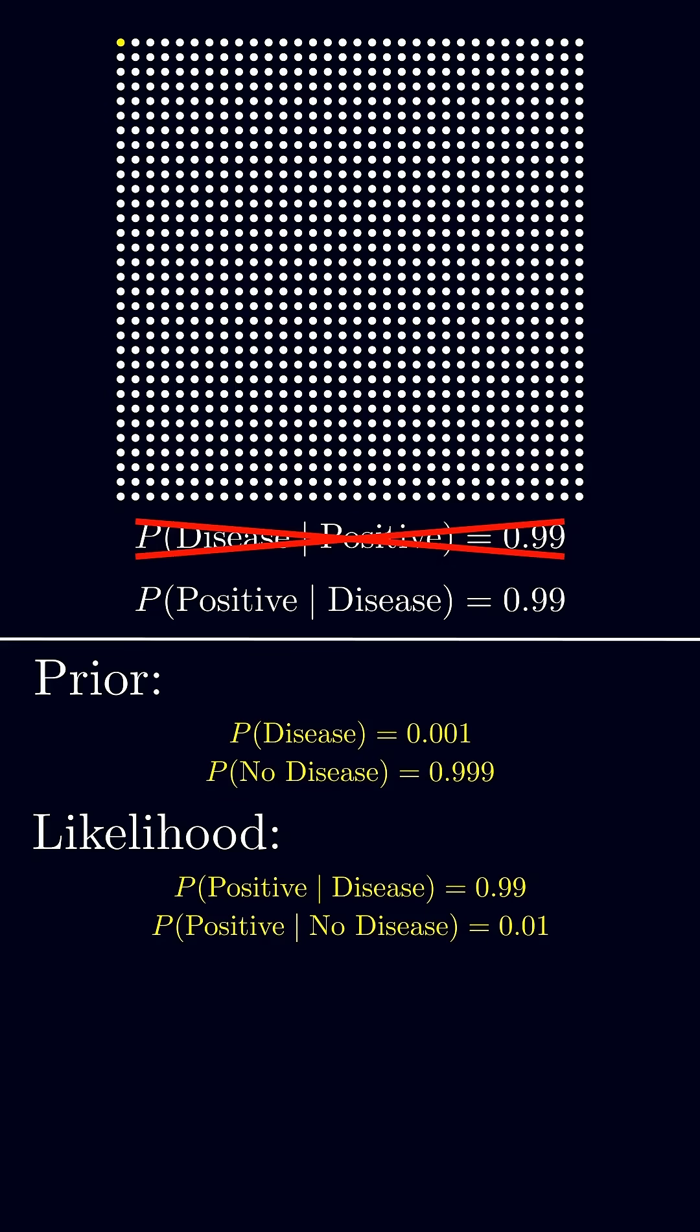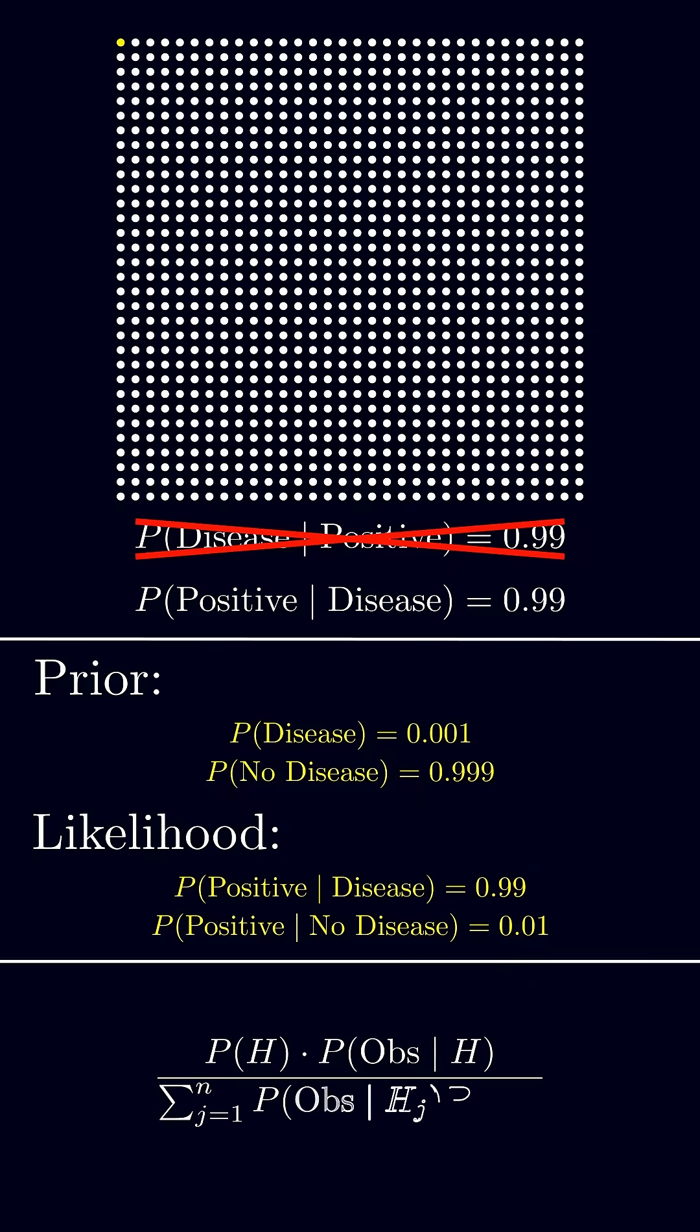We can plug these numbers into Bayes' theorem and get that the posterior probability is 0.99 times 0.001 divided by a normalizing constant of 0.01098. This gives us a final posterior probability of only 0.09.